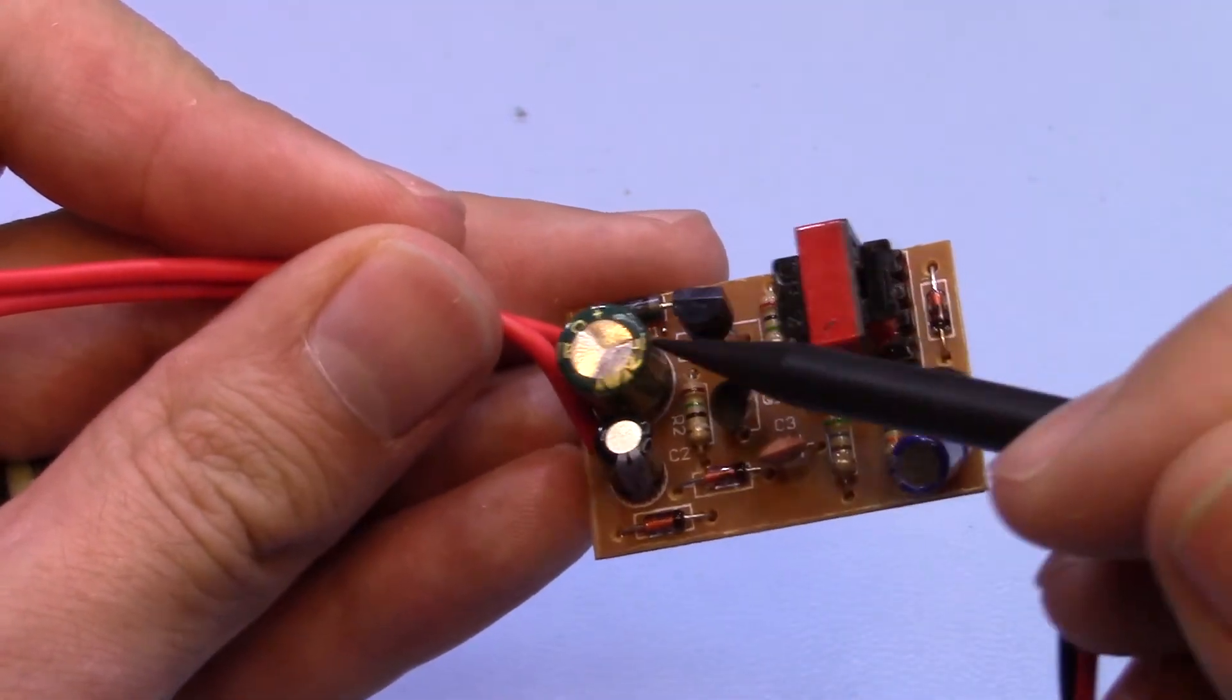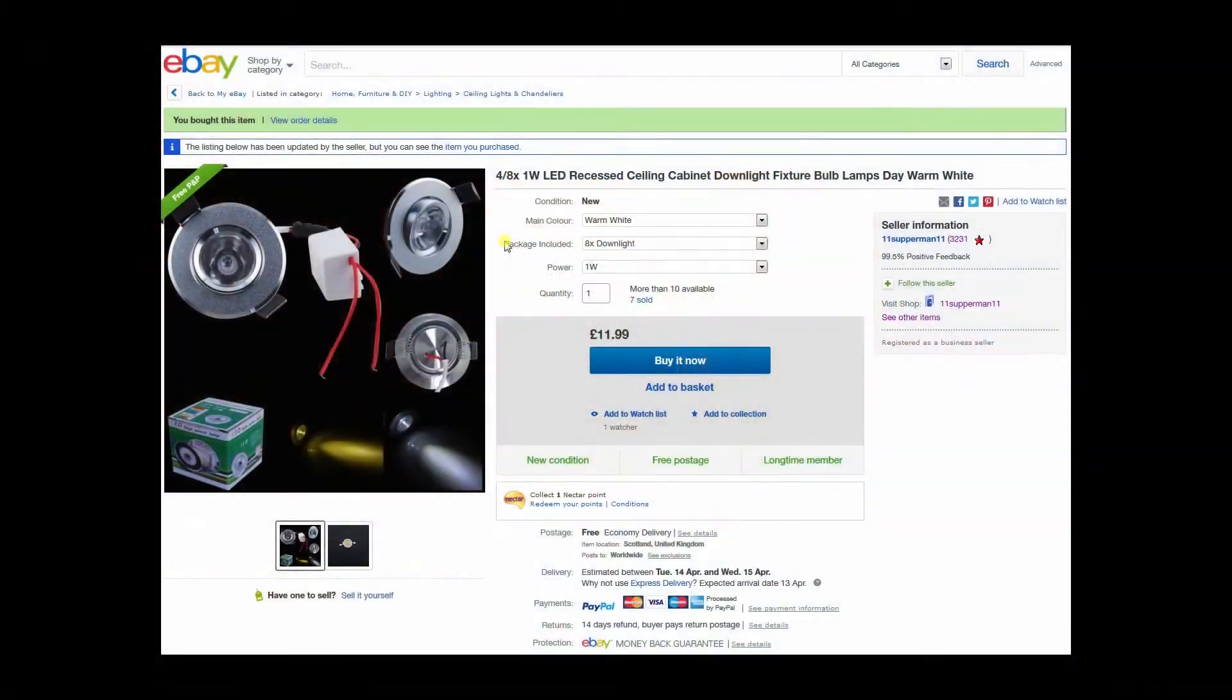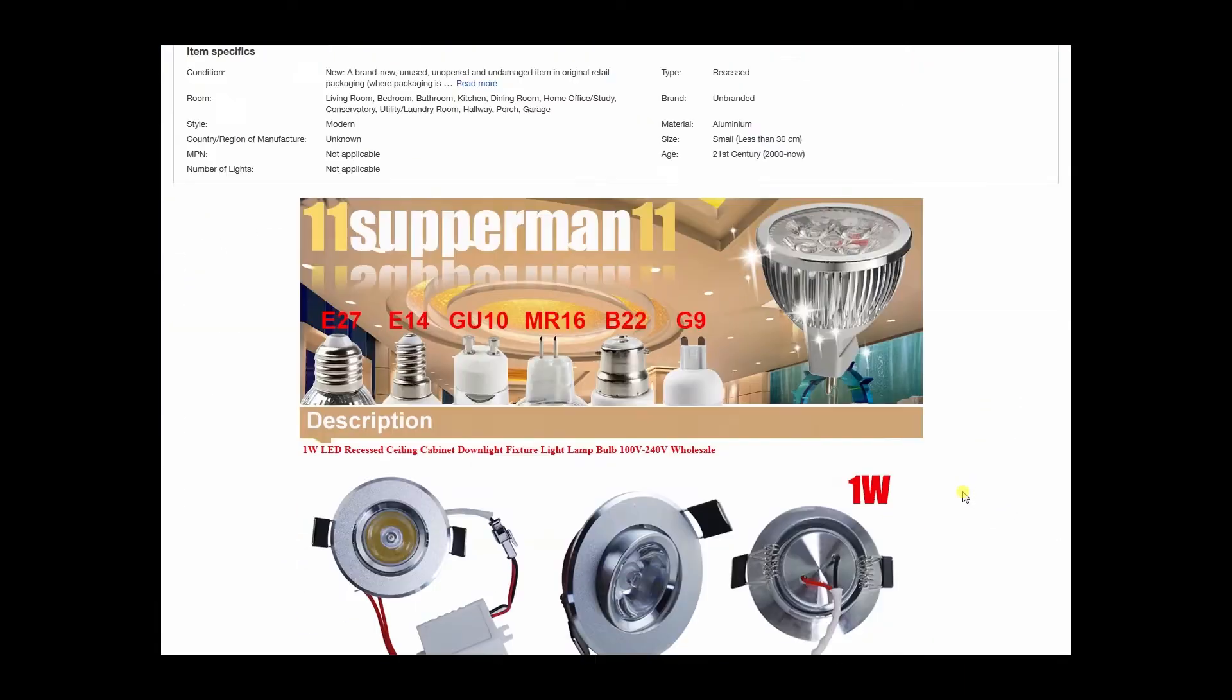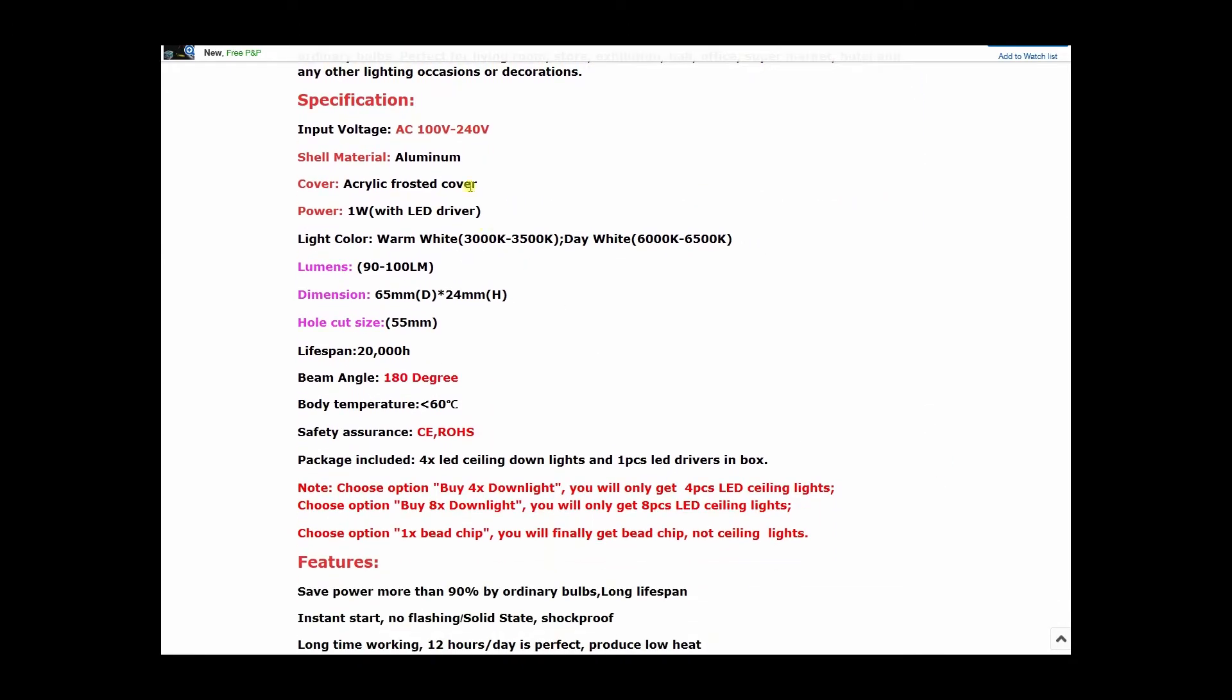Here we have the eBay listing. It's the 4 or 8 one watt LED recessed ceiling light. They come in day white or warm white, pack of 4 or 8, only in the 1 watt version in this style. It was just 11 pound 99 including delivery, free delivery from seller 11 Superman 11. Although this is a Chinese seller, this actually shipped from the UK so it only took two days to arrive. The specifications say aluminum shell, frosted acrylic cover, but it's definitely not frosted which is why the beam angle is so small.